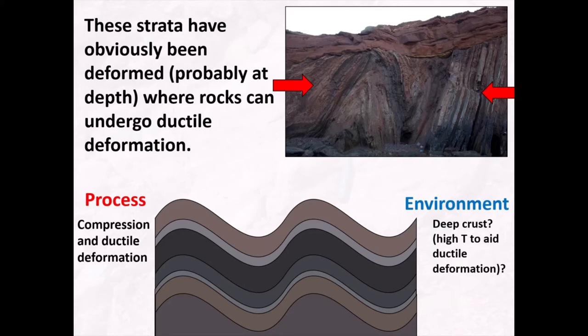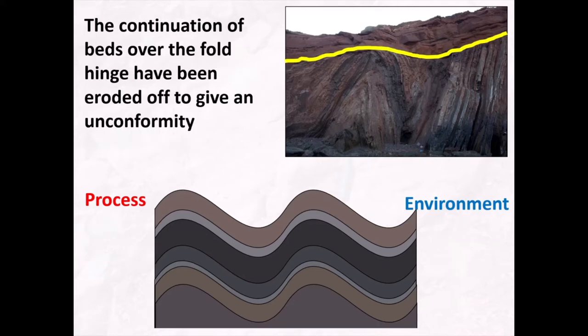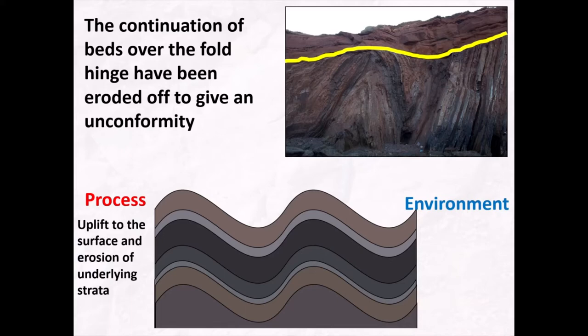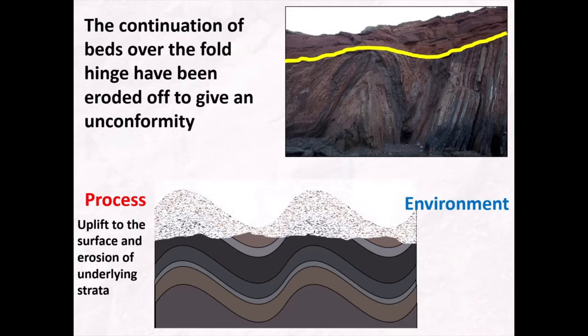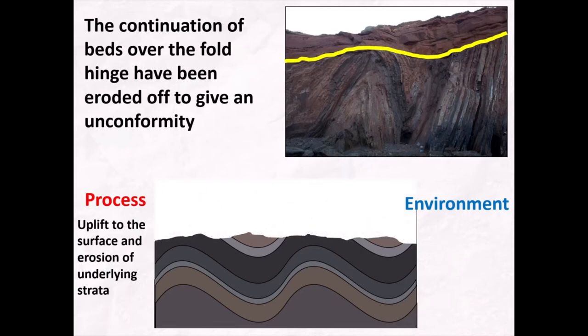When you look at the tops of the folds, they don't continue past that unconformity — they've been eroded down, the tops have been knocked off to give us an unconformity. So after folding, these rocks must have been uplifted to the surface where erosional processes winnowed down those folds to give us an unconformable surface. The environment for net erosion is usually sub-aerial, so I'm going to assume that erosion happened when these rocks were exposed.